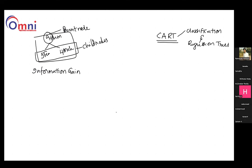When coming to the information gain in the CART models, how do we calculate here? You are having two child classes; we call them as q1 and q2.